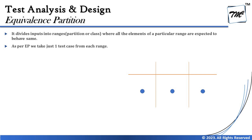Let's look at the definition of equivalence partitioning. EP divides inputs into ranges — also known as partitions or classes — where all the elements of a particular range are expected to behave the same. When there is a group of elements which behave similarly, we put them together into one partition.